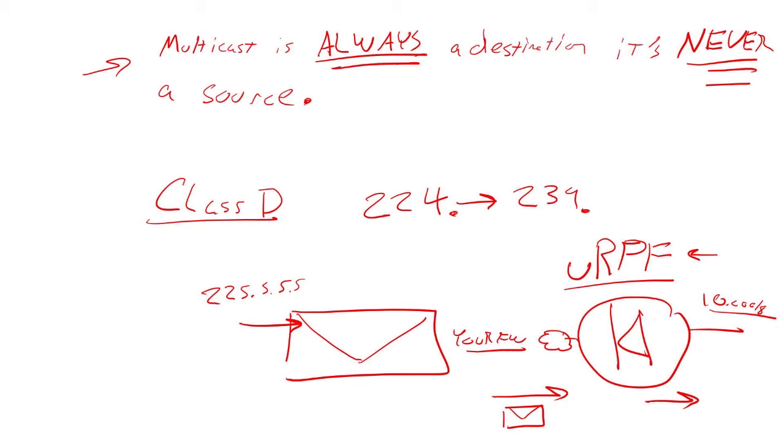Here's the thing about unicast reverse path forwarding: It leverages your IP routing table. And not to go into too much detail about networking, but multicast is handled in a different routing table called a multicast routing table. So when you try to do a lookup of a multicast address in an IP routing table, as niche and goofy as that sounds, guess what happens?